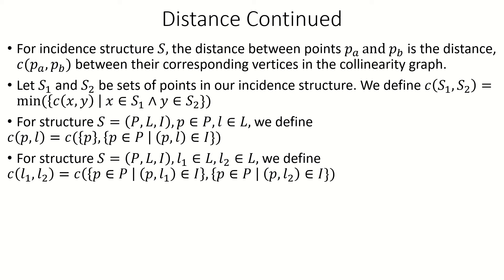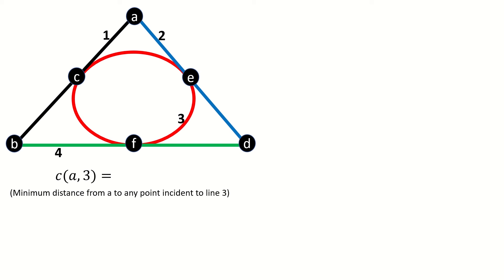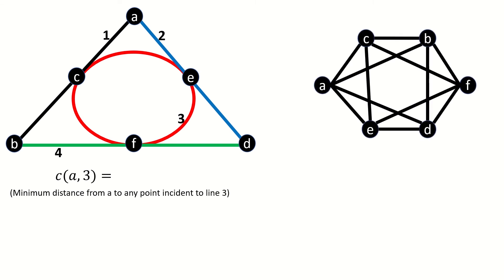To solidify these concepts, let's do an example involving point-line and line-line distance, using this incident structure. What's the distance between point A and line 3? Point-line distance is the minimum of the distances between our point and any point incident to our line. Line 3 is incident to points C, E, and F, so we're looking for the minimum of the distances between A and C, A and E, and A and F. Using the collinearity graph, the distance between A and C is 1, the distance between A and E is also 1, and the distance between A and F is 2. The minimum is 1, so the distance between point A and line 3 is 1.